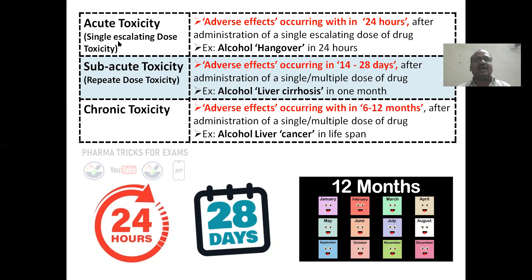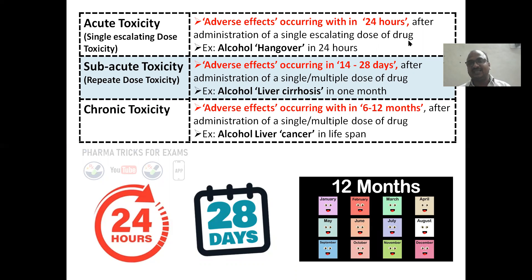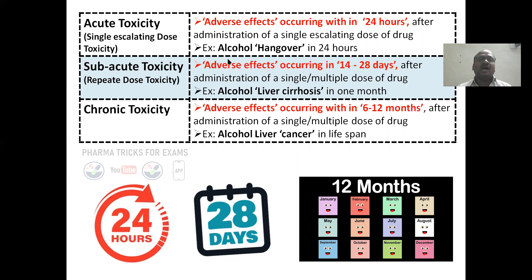Here you can see acute toxicity, subacute toxicity, and chronic toxicity. Acute toxicity refers to adverse effects of the drug which occur within 24 hours — after administration of a single escalating dose. For example, alcohol: if you are taking it within 24 hours, you will get a hangover.